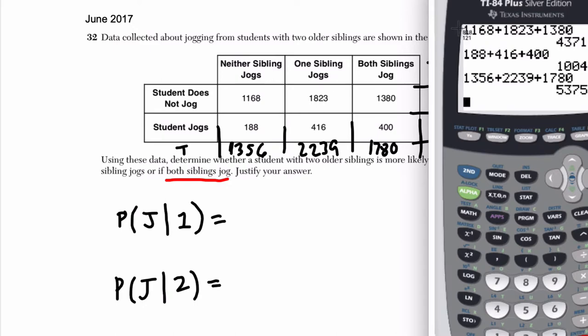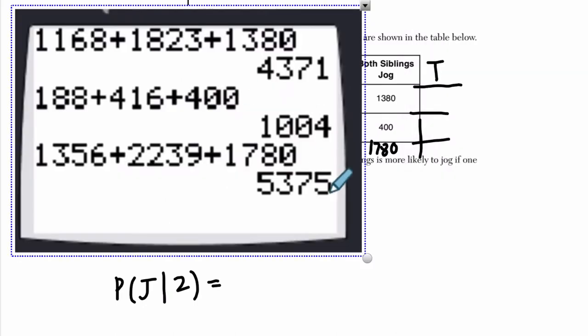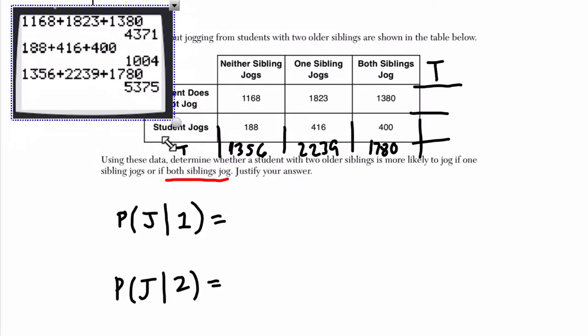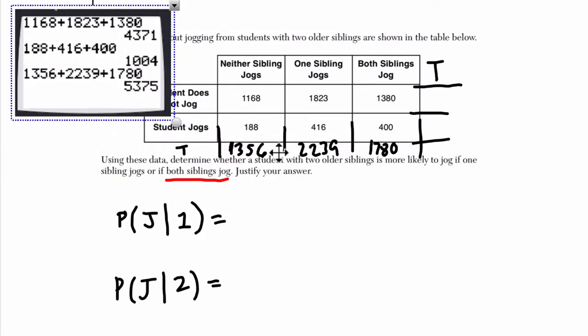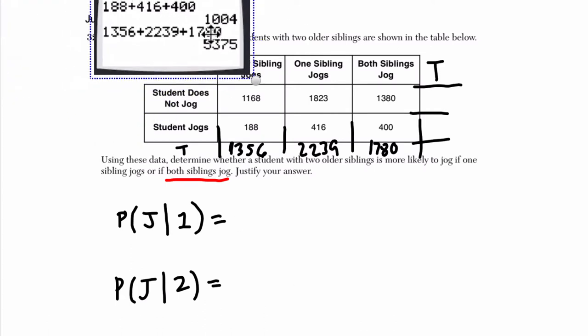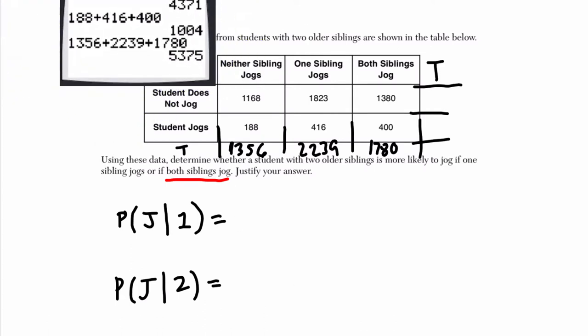I'm going to take a screenshot of this so we just have the data right there. All right, so all of that work, what do we know? We know that there are 4,371 students who do not jog, 1,004 students who do jog, and 5,375 students in total. Why is this relevant? Well, you might have solved it a different way than I did. I just want to make sure that our totals add up.